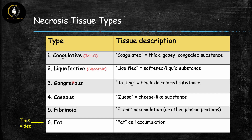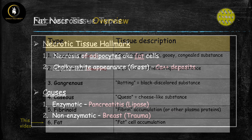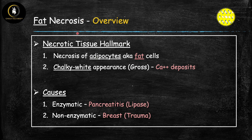Here are the six subtypes of necrosis. The names can seem random, but they actually describe what the underlying necrotic tissue looks like — they describe the hallmark feature. For example, liquefactive means the tissue is liquefied; caseous refers to the tissue being cheese-like; fat means the tissue has a lot of fat cell accumulation. Each type also has its own specific pathophysiology, specific diseases that cause it, and characteristic histopathology — those are the things you need to learn to answer test questions.